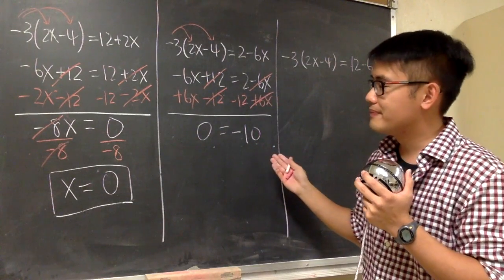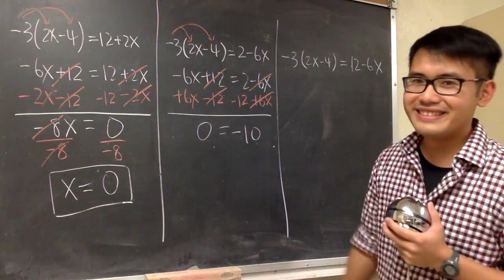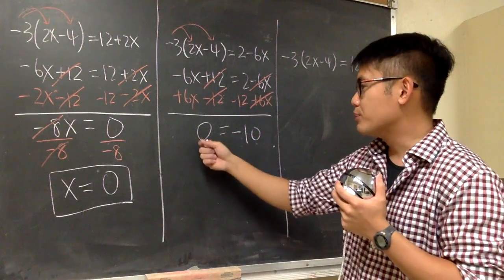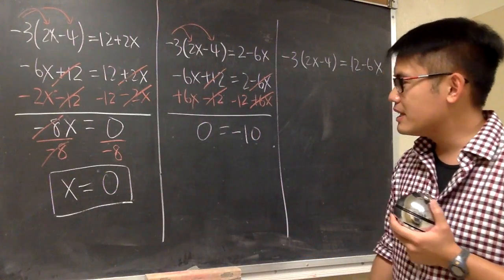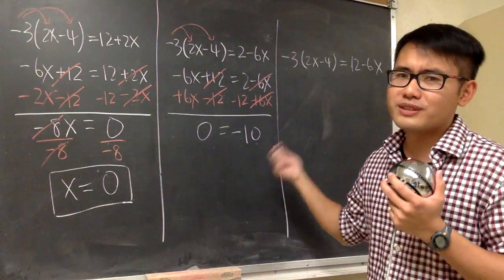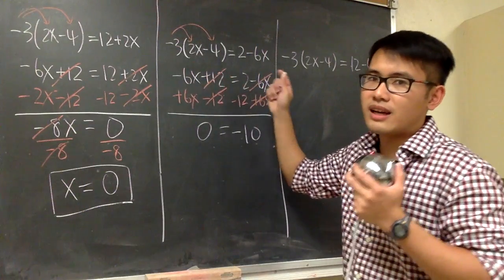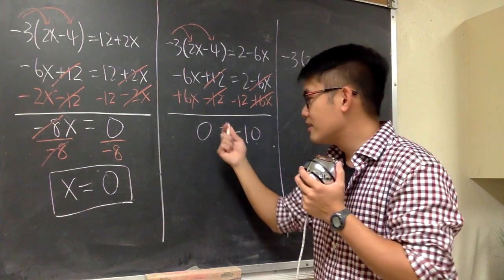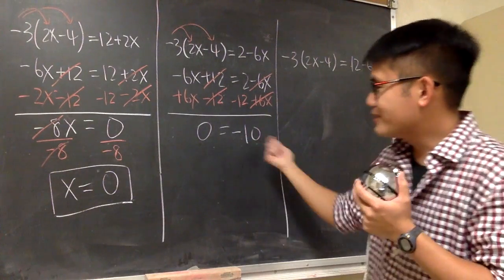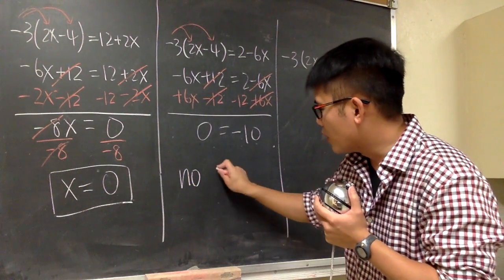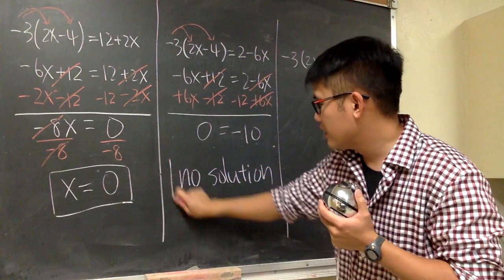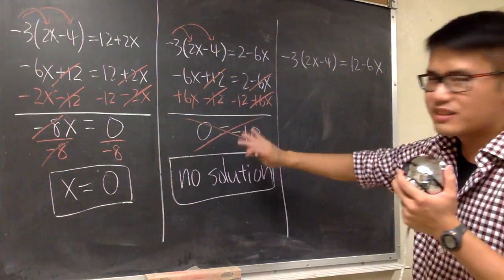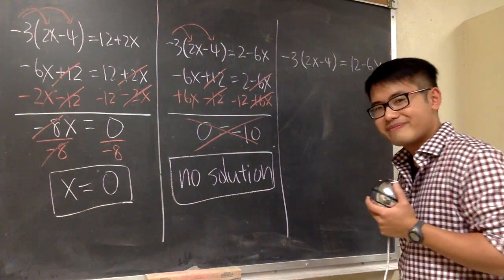0 is equal to negative 10. Is this true? No. And you see, we don't have any more x. So what would be the response to this? This right here is a false statement. This equation is not solvable because it has no solution. When you have something that doesn't make sense — in this case, 0 is equal to any number that's not 0 — we know the original equation has no solutions. No solution is the response to this. 0 equals negative 10 doesn't make sense, so the answer is no solution.